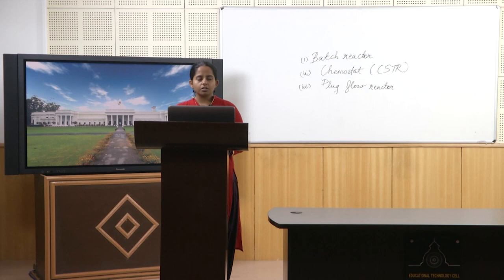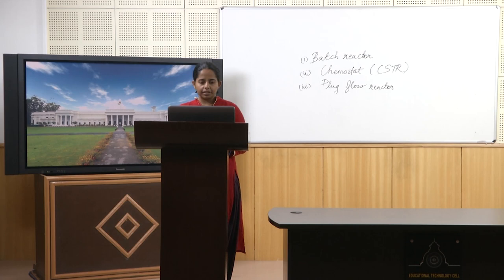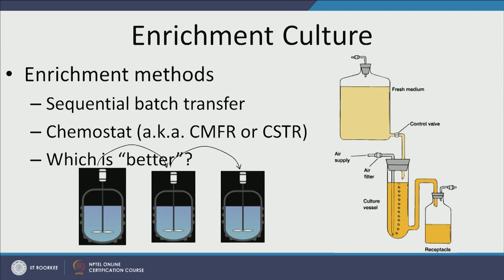In sequential batch transfer, substrate dynamics look like this: initially there is a lot of food, microbes consume it, it drops, and then when you transfer to a new batch reactor, there is another spike because you added fresh food — and this repeats. In CSTR or chemostat, it looks very different: initially you have a good amount of food from fresh media, but over time the amount of substrate and microbes stabilize in the chemostat.